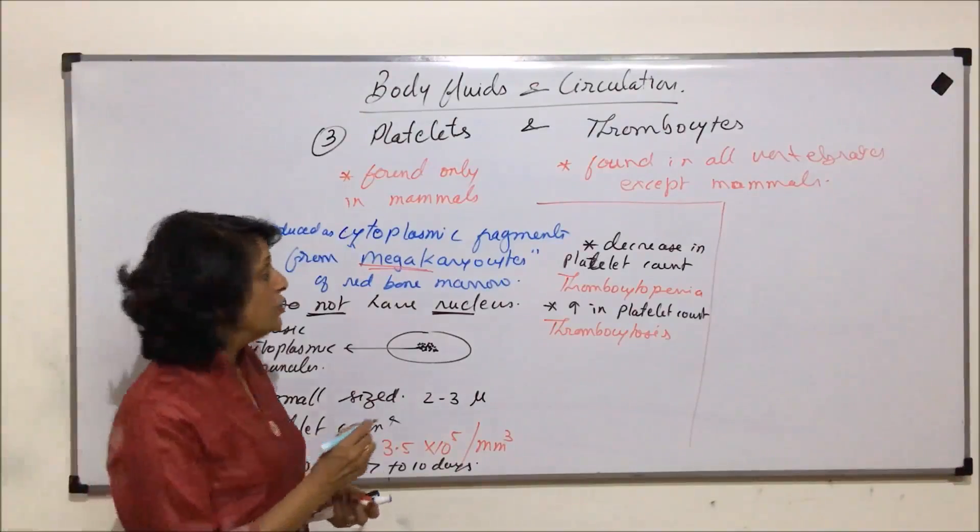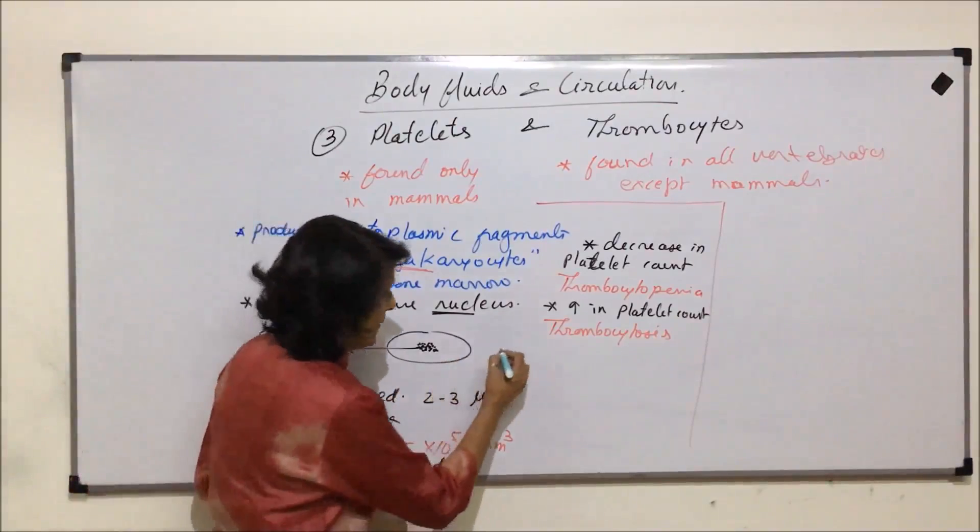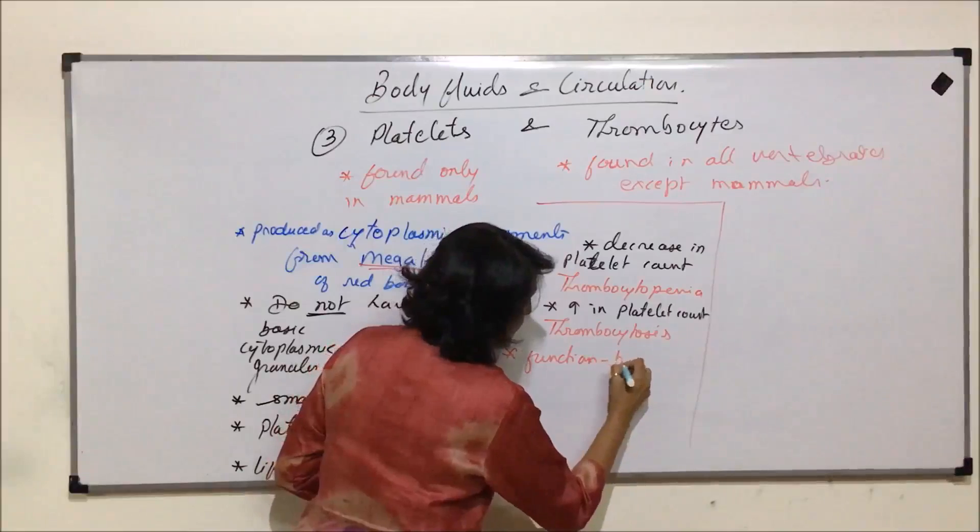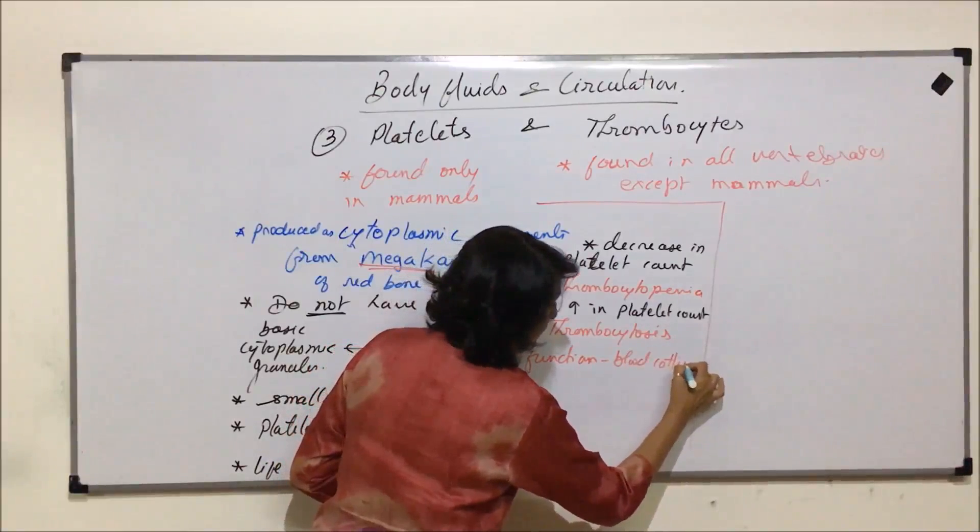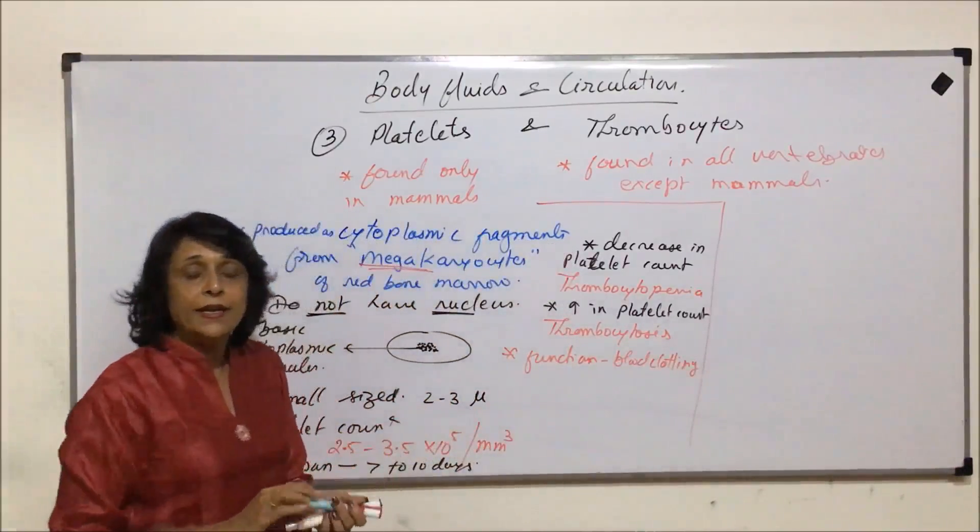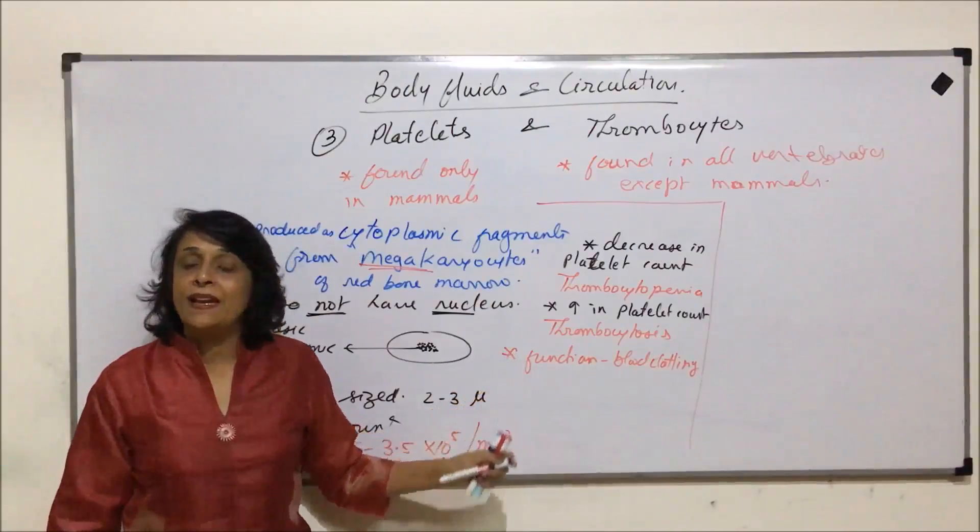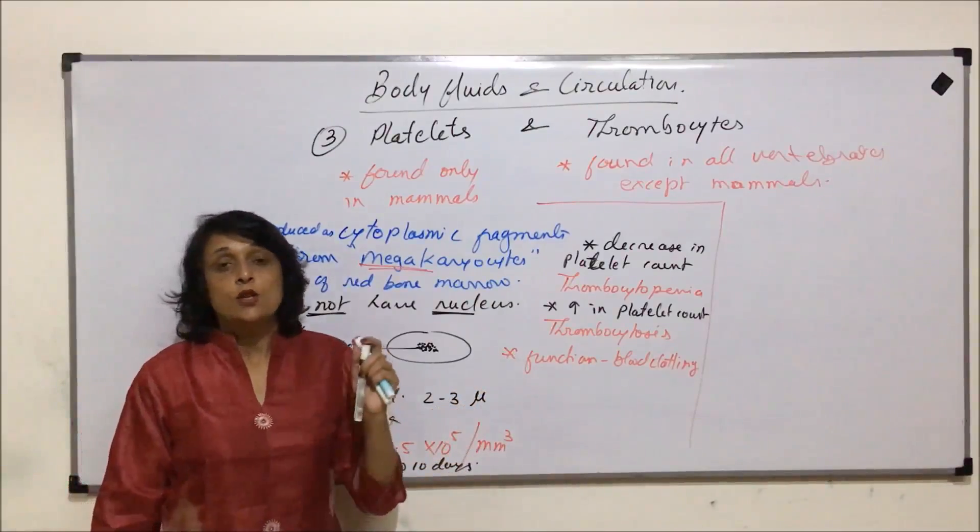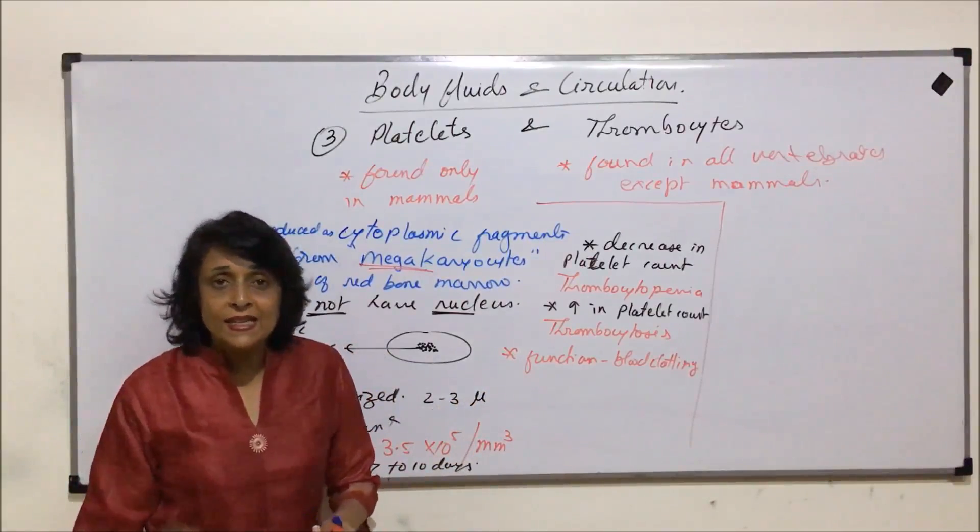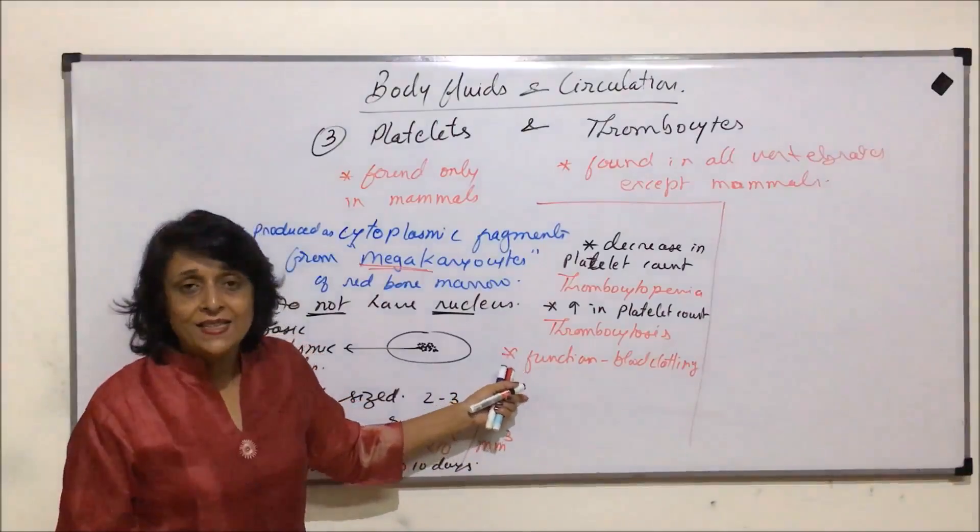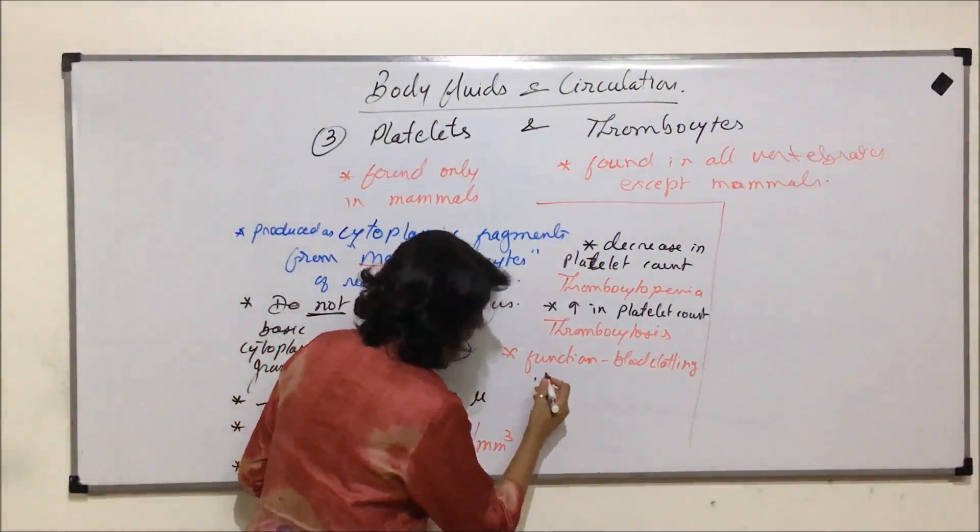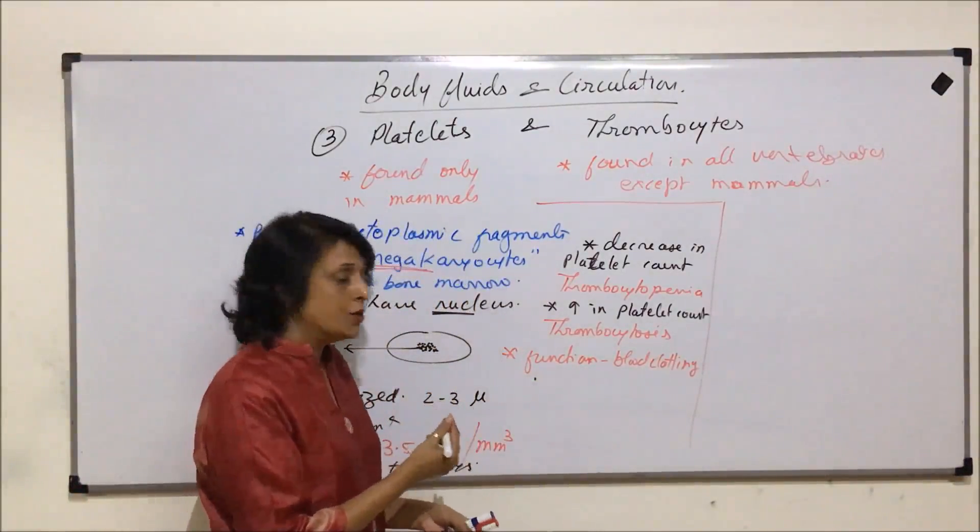When platelets get injured, we know that platelets help in blood clotting. So the role or function is blood clotting. And the blood clotting actually starts whenever the platelets get injured. So whenever there is an injury to the platelet, there is an enzyme or substance which is released. It is known as thromboplastin which starts the process of clotting.